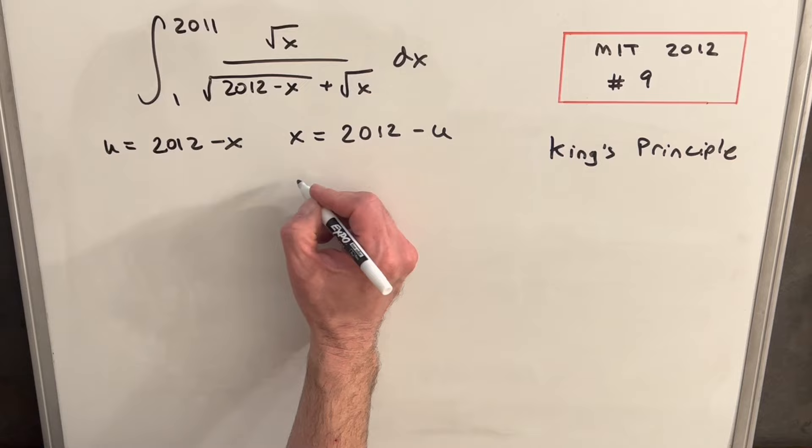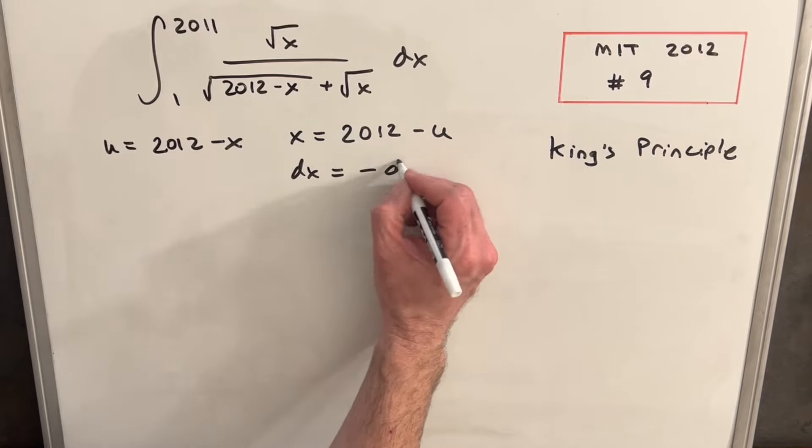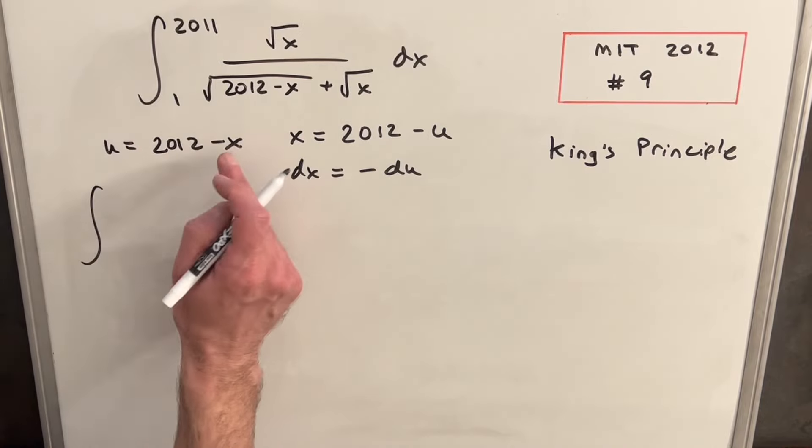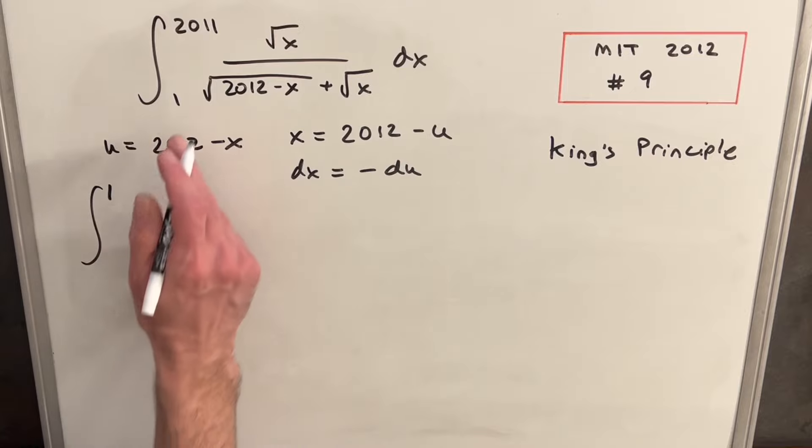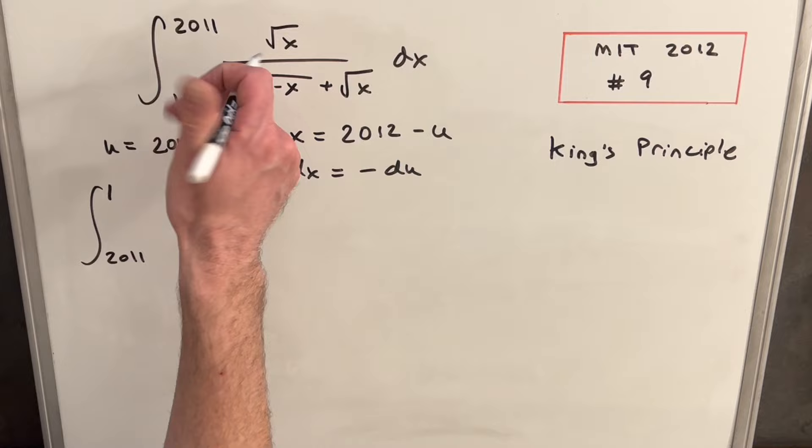Let's get our dx value. dx is going to be, 2012 is constant so that's 0, we're going to have a minus du. Then we'll make the substitution, first updating our bounds. We plug 2011 in here, we're going to have a 1 up top, and then plugging a 1 in, we're going to have a 2011 down here, just flipping the bounds.